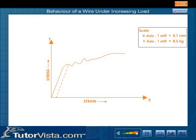Now plot a graph with strain along the x-axis and stress along the y-axis. Notice that the portion OA of the graph is a sloping straight line. This means stress is proportional to strain — this region obeys Hooke's law.